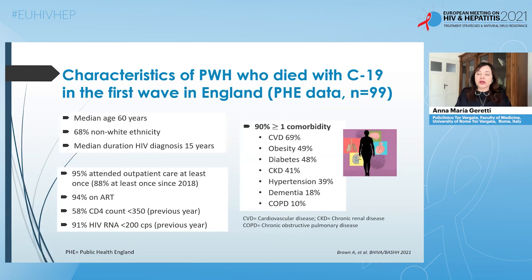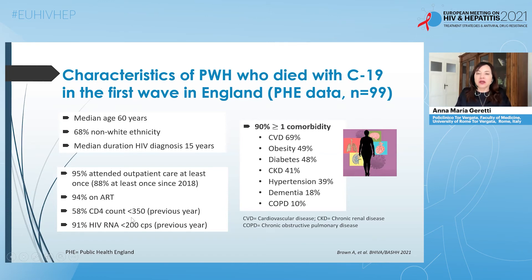We also have more complete data on people with HIV who died with COVID-19 in England. Public Health England analyzed 99 people who died with HIV during the first wave. The median age was 60 years, 68% were of non-white ethnicity. HIV infection was well established and the majority were engaged with care and on antiretroviral therapy. 58% had a CD4 count below 350 in the previous year, but the vast majority had a suppressed viral load. 90% had at least one comorbidity.